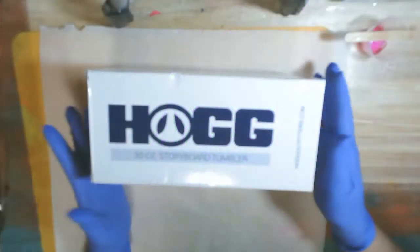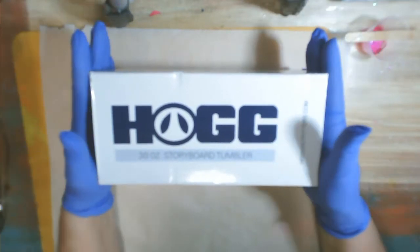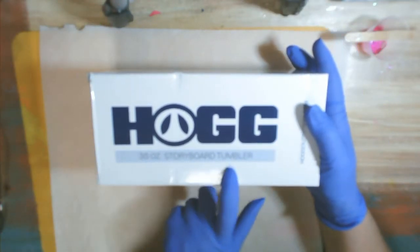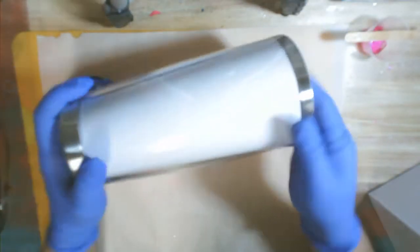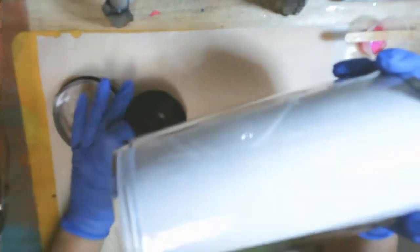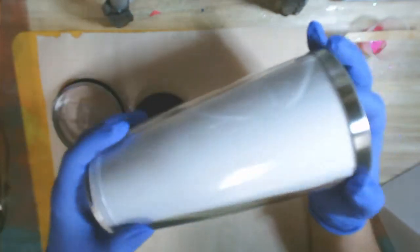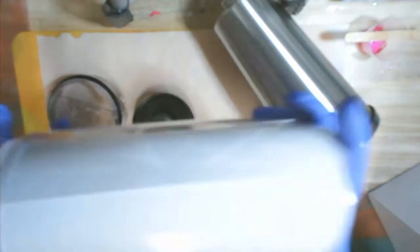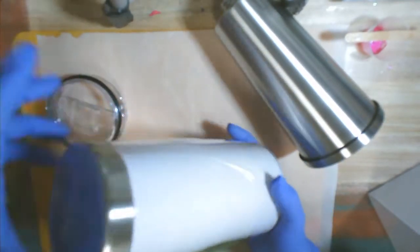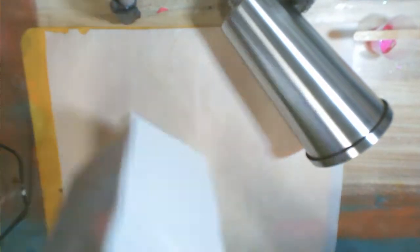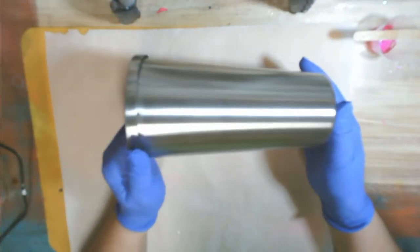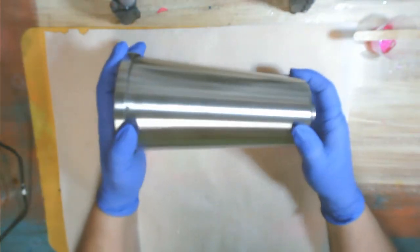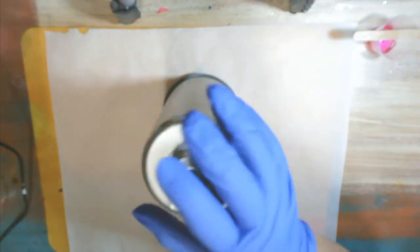Today we're going to be working on this 30-ounce storyboard tumbler. I'm going to get it unpacked. This comes apart, so you undo the bottom and then just push that plastic sleeve off. I always put mine back together because I end up losing the parts otherwise.